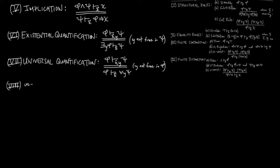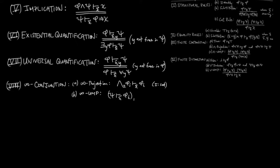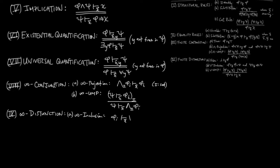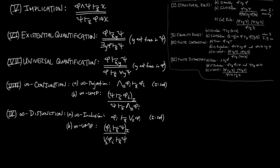Eighth, infinitary conjunction: we have the infinite versions of the projection and universal mapping properties discussed for the finite conjunction case, and we assume that the index is given by some set. Ninth, infinitary disjunction is similar to the finite disjunction case, but with a possibly infinite set i as an index.